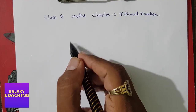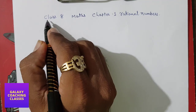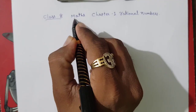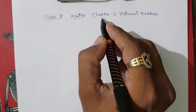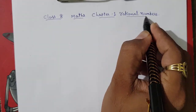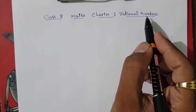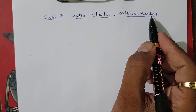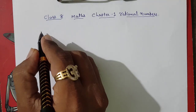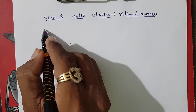Hello friends, my name is Chetan Vadadya and today we are going to study Class 8 Mathematics Chapter 1: Rational Numbers. Before starting with rational numbers, you should know about different types of numbers, which we are also going to study first.